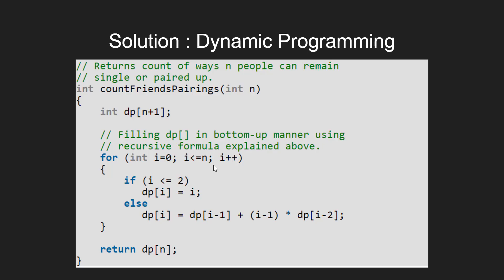For i ≤ 2, we have dp[i] = i. We run a for loop for i from 0 to n. For i ≤ 2, dp[i] = i; otherwise, we apply the recursive formula: dp[i] = dp[i-1] + (i-1) * dp[i-2].